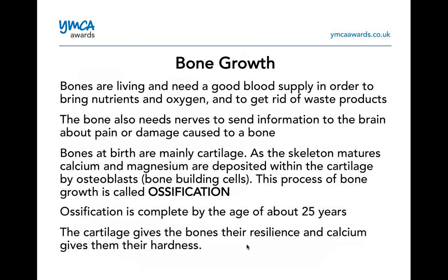There are a couple of key words for bone growth. Bones are living and need a good blood supply to bring nutrients and oxygen, and they also help to get rid of waste products. Bones also need nerves to send information to the brain about pain or damage. Bones at birth are mainly cartilage, and as the skeleton matures, calcium and magnesium are deposited within the cartilage by osteoblasts — these are bone-building cells. The whole process of bone formation is known as ossification, which is a really key word for your exam.